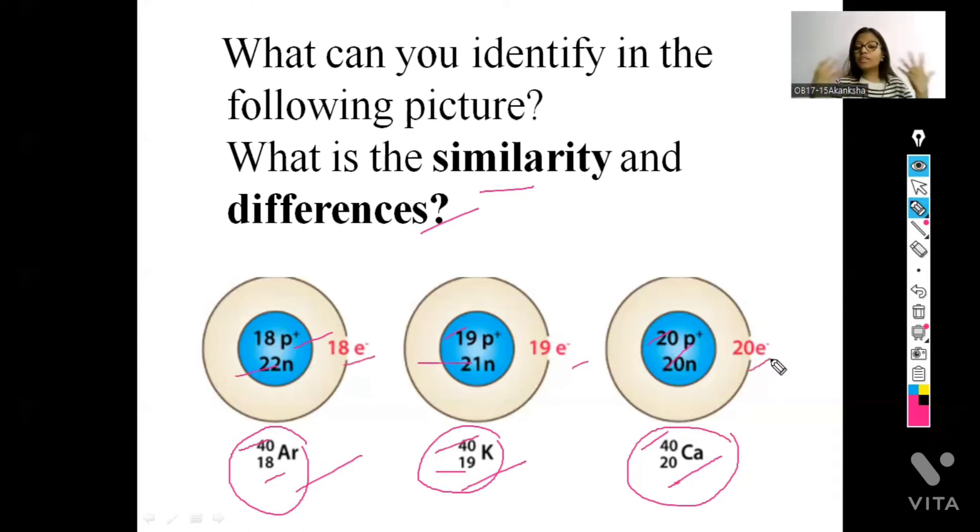So, in all these atoms, there is just one similarity and that is they have similar atomic mass. You have to remember this. The similarity is they have similar atomic mass and the differences is like there are many differences in these three elements, like their atomic numbers are different, their protons are different, proton number is different, their neutron number is different, and also their electron number is different. So, this was all about the similarity and differences.